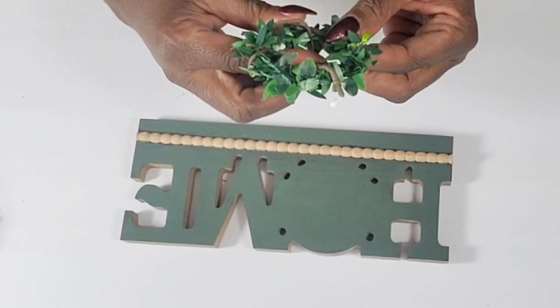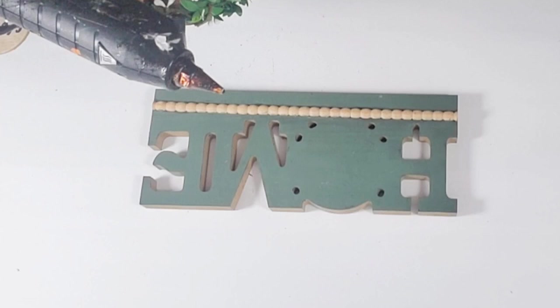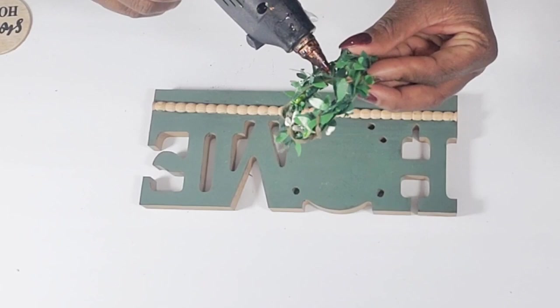And so now I'm just going to take some hot glue and attach it right back where it was. Attach it to the O of the home and then I'm going to attach the little home sweet sign right on the top of it and I'm just going to use hot glue for that part.